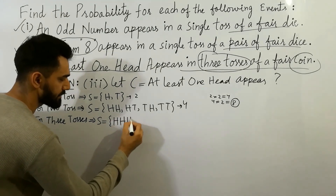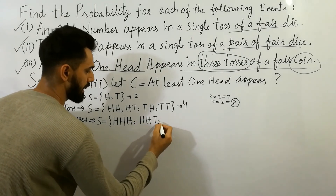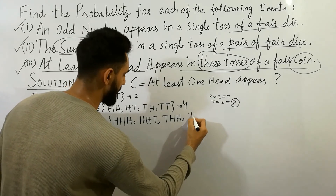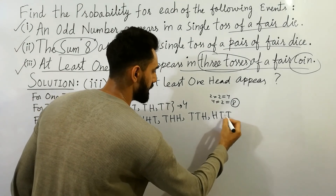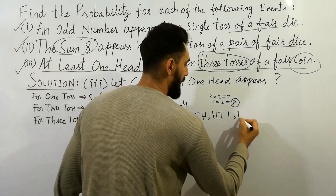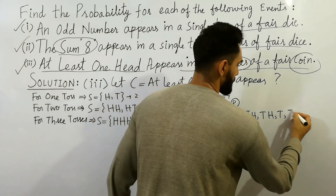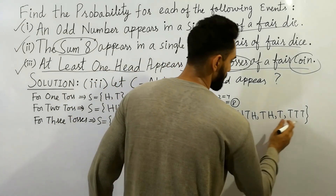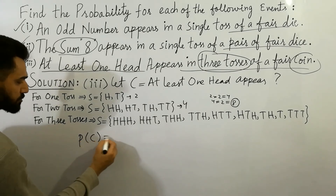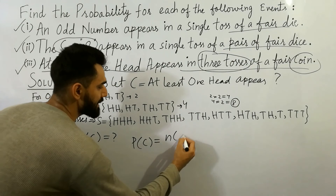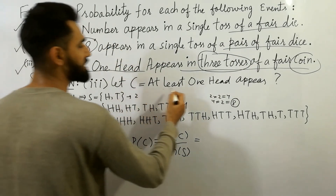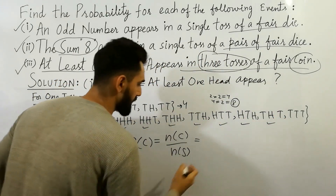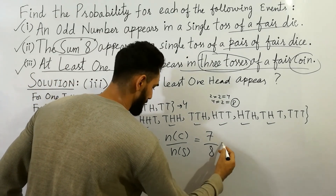For three tosses, the eight outcomes are: head-head-head, head-head-tail, tail-head-head, tail-tail-head, tail-tail-head, head-tail-tail, head-tail-head, tail-tail-tail. Count them: one, two, three, four, five, six, seven, eight. Now calculate the probability of C. Probability of C equals number in C divided by number in sample space. At least one head appears — that excludes only tail-tail-tail, so there are seven outcomes with at least one head. So probability of C equals seven divided by eight. Thanks for watching this video.